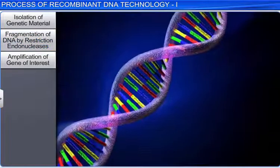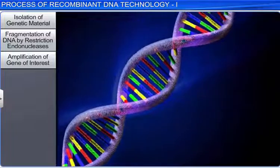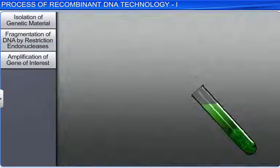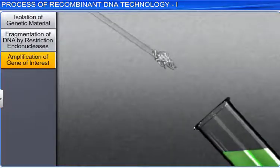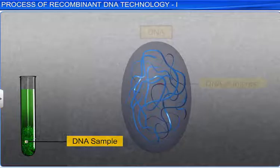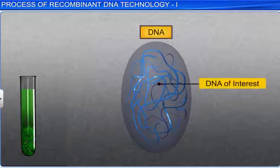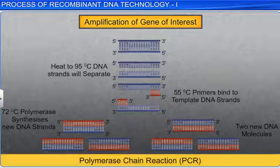Scientists need a significant number of DNA samples for molecular and genetic studies. Therefore, the next step is the amplification of the gene of interest. The extracted DNA sample can be amplified, or used to make multiple copies, by using a technique known as Polymerase Chain Reaction, or PCR.